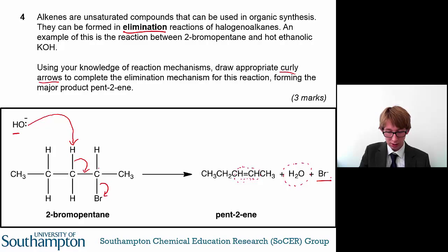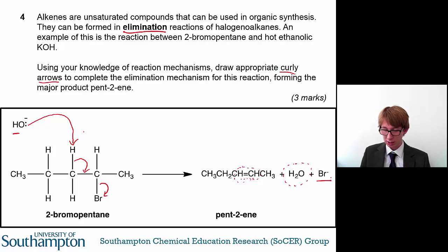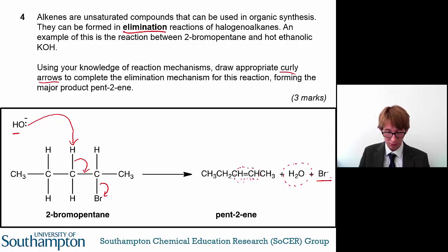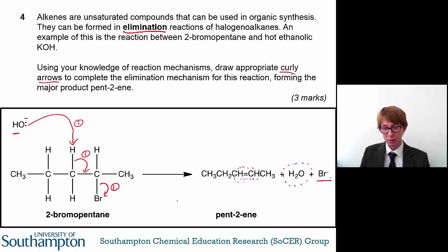So you're removing this proton, breaking the carbon-hydrogen bond, forming the carbon-carbon double bond, and then losing the bromine atom. You can see where these curly arrows are going and where the electrons are going, because that's what we're representing. From the products you can see where the electrons have gone. In terms of marks, you get one mark for each correct curly arrow.